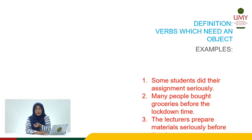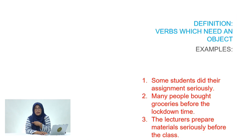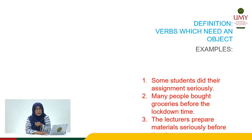In the third sentence, 'The lecturers prepare materials seriously before the class.' The verb is 'prepare' and the object is 'materials.' So the verb here needs an object, which is why we call it a transitive verb — because the verb needs an object or objects.